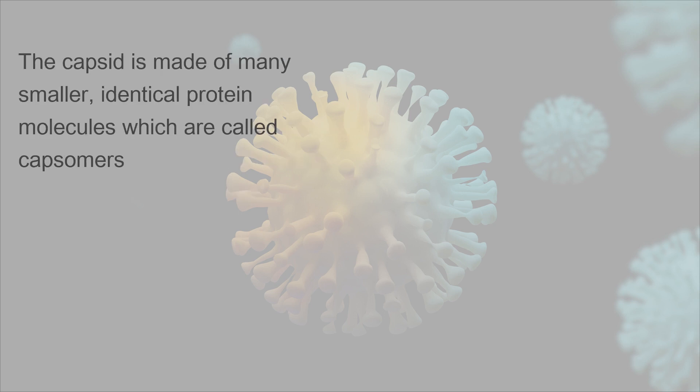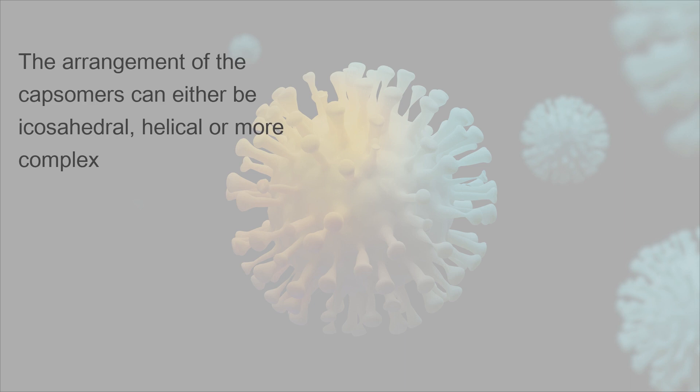The capsid is made of many smaller, identical protein molecules, which are called capsomers. The arrangement of the capsomers can either be icosahedral, helical, or more complex.